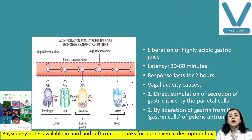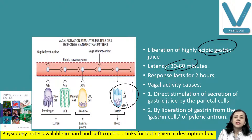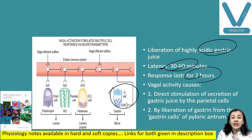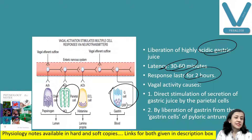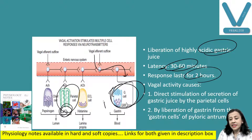Because of gastrin, a large amount of HCL is secreted, making the gastric juice highly acidic. This occurs after 30 to 60 minutes because the hormone requires that latency to exert its action, and the response lasts for two hours. Vagal activity causes action by two ways: first it directly stimulates parietal cells and increases HCL secretion; second it acts through G cells and increases gastrin secretion, and gastrin in turn increases secretion of HCL.